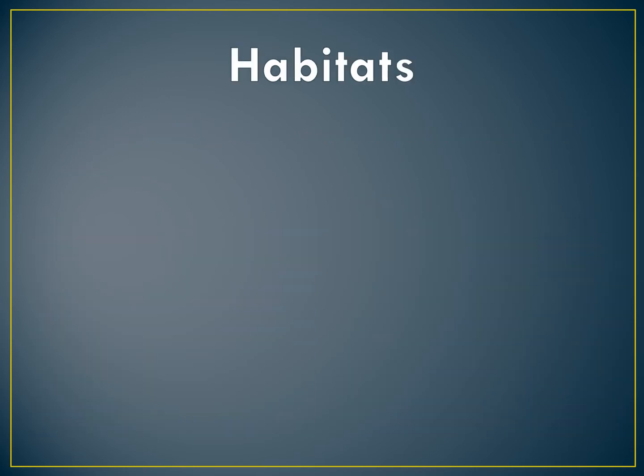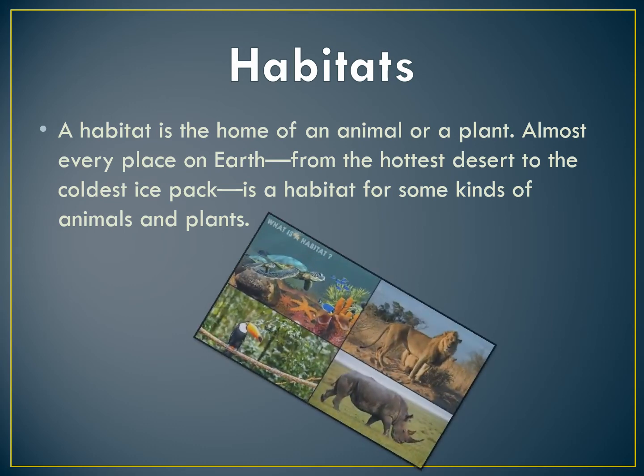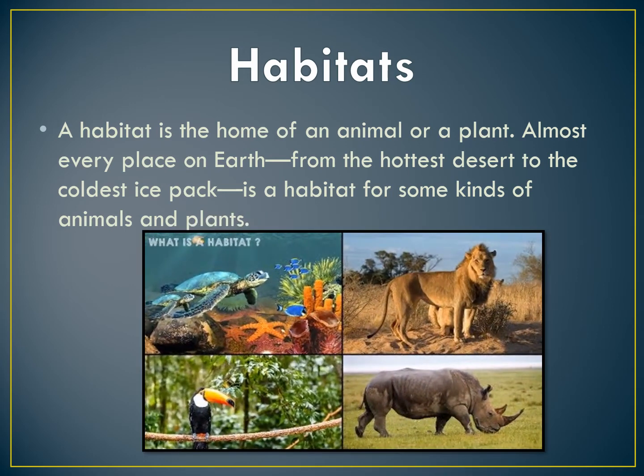The next word is habitats. A habitat is the home of an animal or plant. Almost every place on earth, from the hottest desert to the coldest ice pack, is a habitat for some kinds of animals and plants. There are four pictures of different habitats and some animals that live in them. I'm sure you guys all know what habitats are.